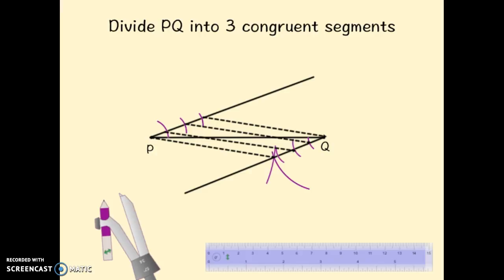And now notice what that gave me. I'm going to trace over these in another color. This divided PQ into one, two, three congruent segments. Thank you.